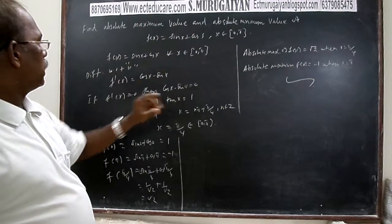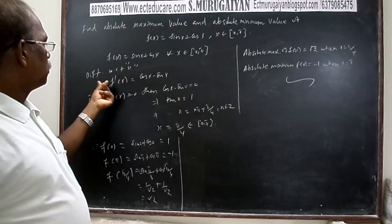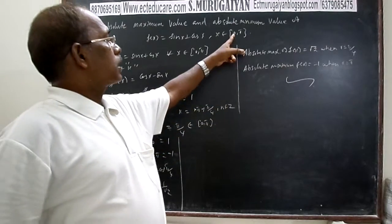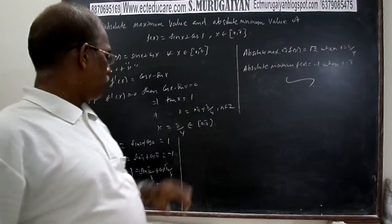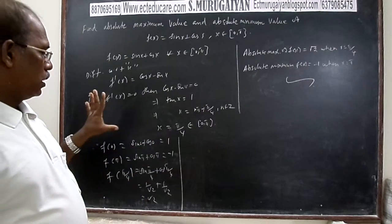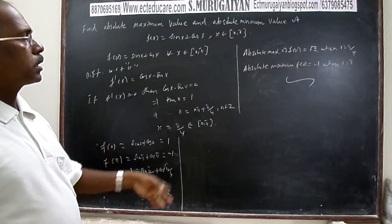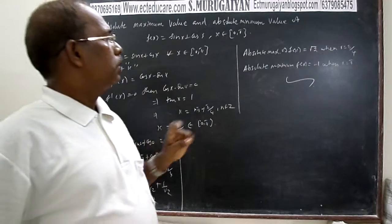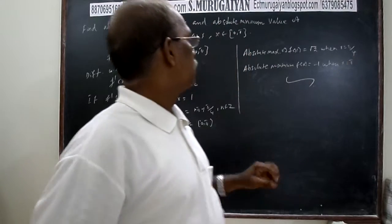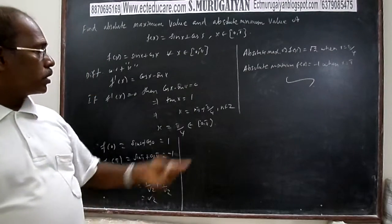The general procedure to find absolute maximum and minimum: differentiate the given function and solve f'(x) = 0 to find the critical points. Take those critical points along with the extreme values of the closed interval. Find the corresponding function values. The greatest of all values is the absolute maximum; the least of all values is the absolute minimum. Here, absolute maximum is √2 at x = π/4, and absolute minimum is -1 at x = π.